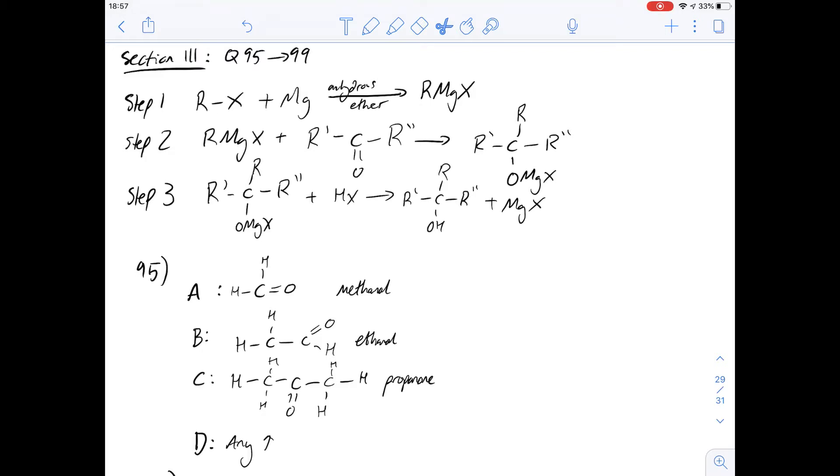Question 95 asks which aldehyde or ketone would be used to produce a secondary alcohol. Now knowing that a secondary alcohol is an OH group attached to a carbon which in itself is attached to two carbons, you might be able to tell that it can't be formaldehyde or methanol because that only has one carbon atom in it which means it would end up being a primary alcohol.